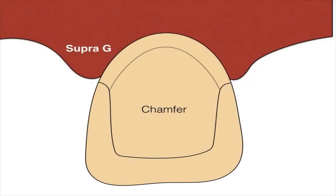Supra-gingival margins, on the other hand, are above the level of the gingiva — very easy to clean, but they don't look aesthetic. So posteriorly we give supra-gingival margins, and on the anterolabial surface alone we give sub-gingival margins.